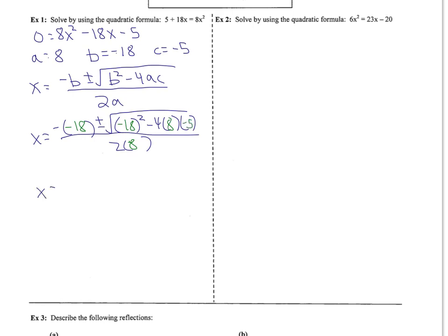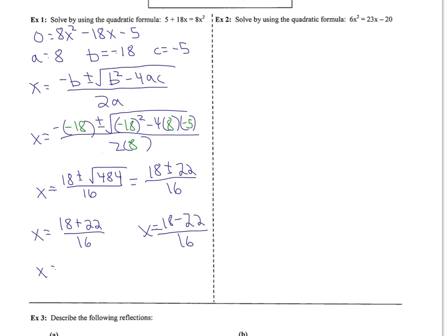Simplifying this equation, x equals 18 plus or minus the discriminant, or the number inside the square root is 484, all over 16. Break this up. What we have is 18 plus or minus 22 over 16. x either equals 18 plus 22 over 16, or x equals 18 minus 22 over 16. Let's simplify the left equation. x equals 40 over 16, which reduces to x equals 5 halves. On the right side, we have x equals negative 4 over 16, which is negative 1 fourth.